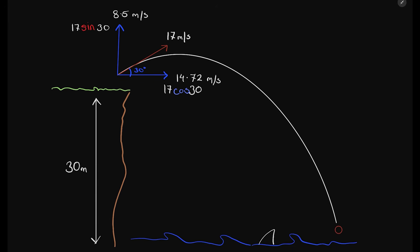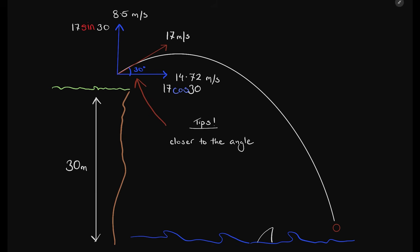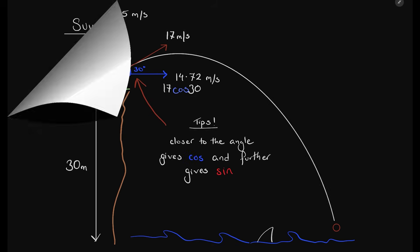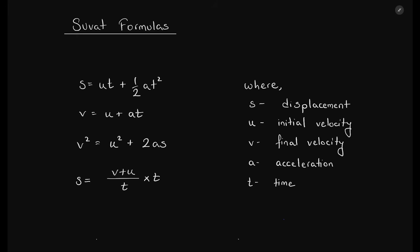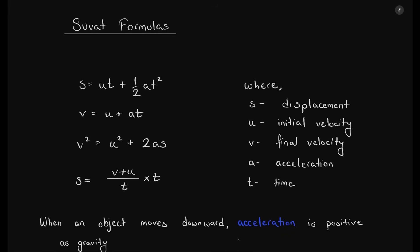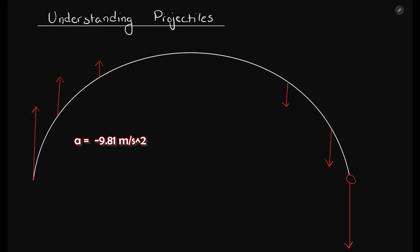Here you can see the four SUVAT formulas that we will be using throughout the maths. When an object moves downwards, acceleration is taken as positive as gravity is helping the object increase its speed. So when calculating the downward movement, I always take acceleration due to gravity as positive.